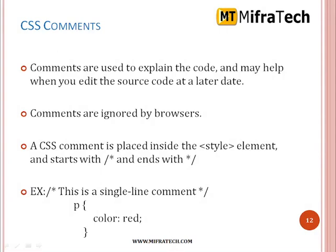CSS comments. Comments are used to explain the code and may help when you edit the source code at a later date. Comments are ignored by the browser. A CSS comment is placed inside the style element and starts with a backward slash. Comments are useful in any language, not only CSS, because when we use comments any other coder or web developer will easily understand the code. This is a single line comment. For paragraph p, color red.